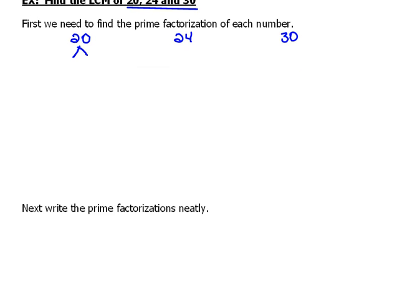For 20, 2 times 10 is 20, and 10 would be 2 times 5. So now that is all prime numbers.